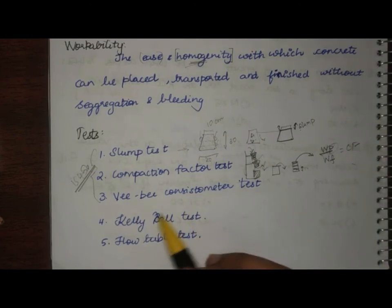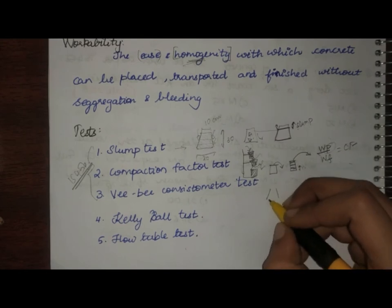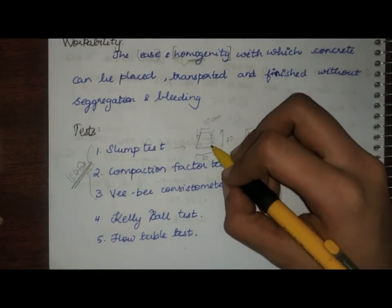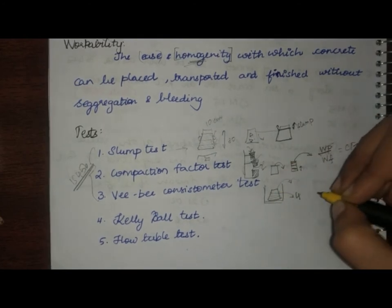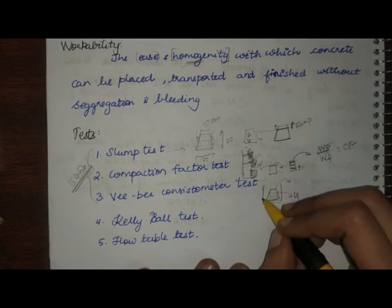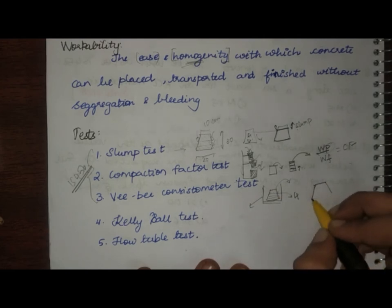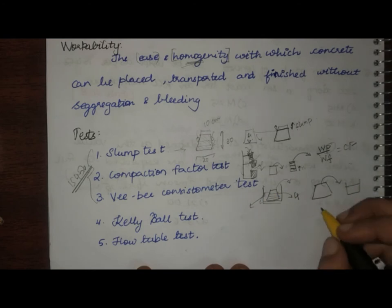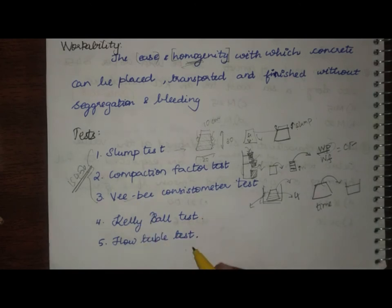Next is the VB consistometer test. Similar to the slump test, but the slump cone is placed inside a cylinder. The concrete is filled in four layers (not three), and when the slump cone is removed, the VB consistometer machine is switched on, providing continuous vibration. The time taken for the concrete to change from the conical shape to the cylindrical shape of the cylinder is called the VB time.